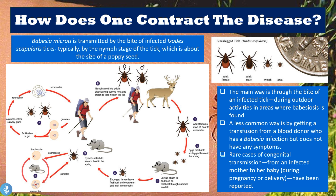In rare cases, there can also be congenital transmission — from an infected mother to her baby during pregnancy or delivery — and a few such cases have been reported. This image to the left side of the screen shows the main way in which the disease is transmitted: through the bite of the infected tick.